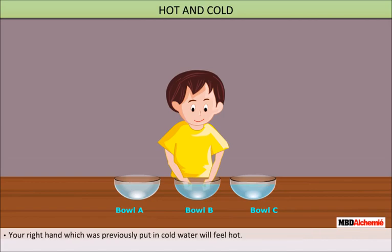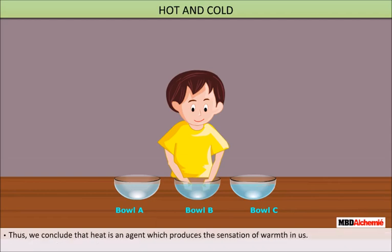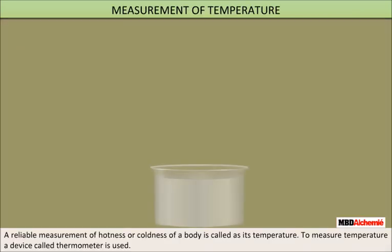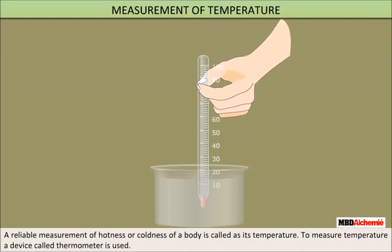Keep these for about two to three minutes, then take out both hands and simultaneously put them in bowl B containing tap water. Your right hand, which was previously in cold water, will feel hot. The left hand, which was previously in hot water, will feel cold — although the temperature of tap water is the same for both hands. Thus we conclude that heat is an agent which produces the sensation of warmth in us.